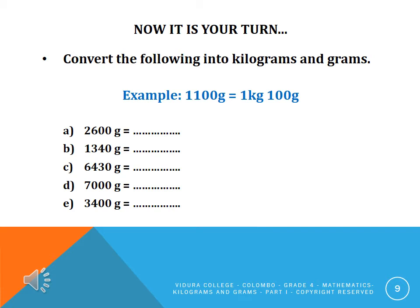Look at the first example: one thousand one hundred grams. If we shift three places from right to left, the one in the thousandths place remains. So it would be one kilogram. The three places you shifted are considered as grams — here it is one hundred grams. So when you convert one thousand one hundred grams into kilograms, the answer is one kilogram and one hundred grams.